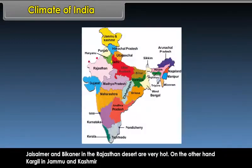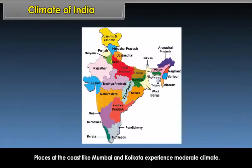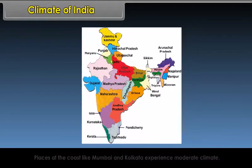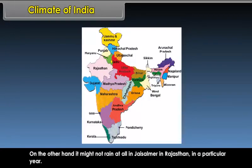Jaisalmer and Bikaner in the Rajasthan desert are very hot. On the other hand, Kargil in Jammu and Kashmir is freezing cold due to difference in altitude and location. Places at the coast like Mumbai and Kolkata experience moderate climate. Mawsynram in Meghalaya receives the world's highest rainfall, while it might not rain at all in Jaisalmer in Rajasthan in a particular year.